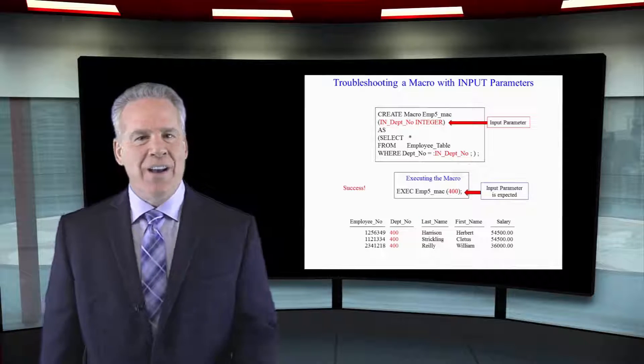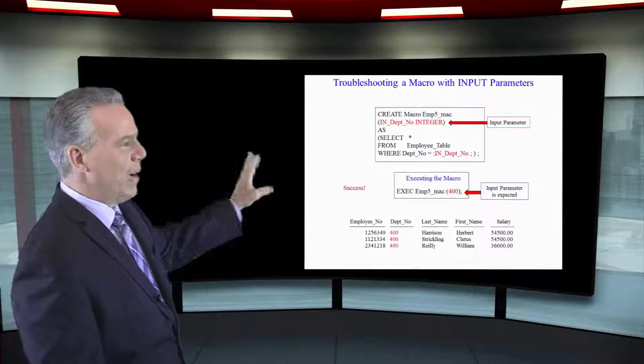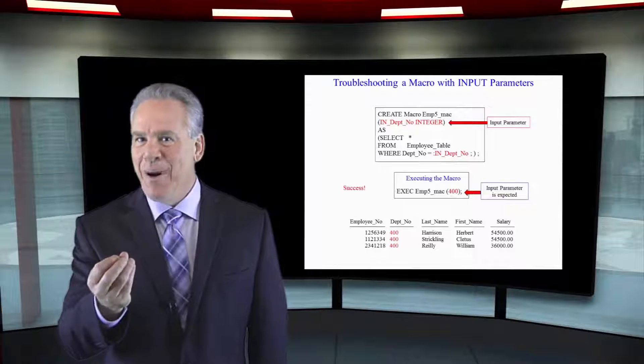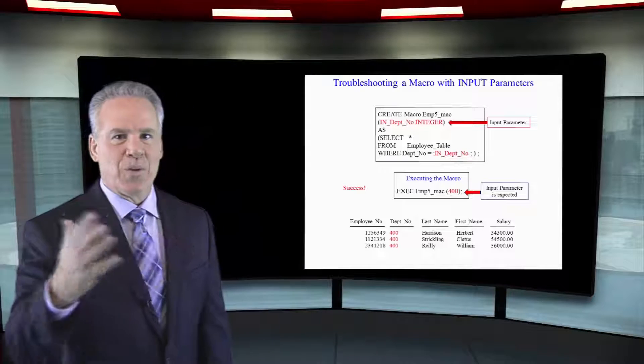Here, we're going to have immediate success because we've got our parameter. When we execute it, we give it its cookie and say, here's department 400, and it's going to work perfect every time.